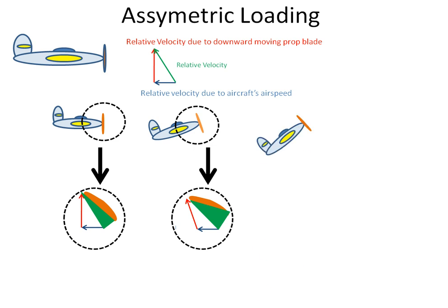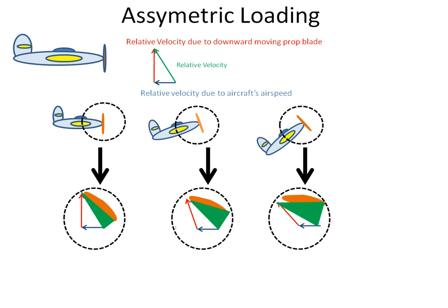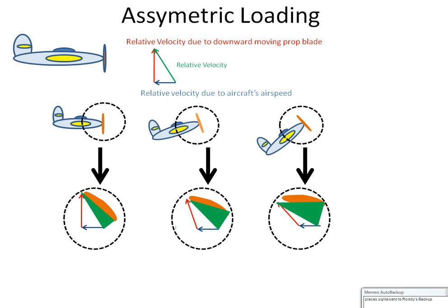If the aircraft pitches up slightly more, we can see that the angle of attack has increased further and that the relative velocity over the downward or forward-moving blade has increased. Conversely, the relative airflow over the upward or rearward-moving blade will have decreased. This will cause an increase in thrust on the downward-moving blade and a decrease in thrust on the upward-moving blade.